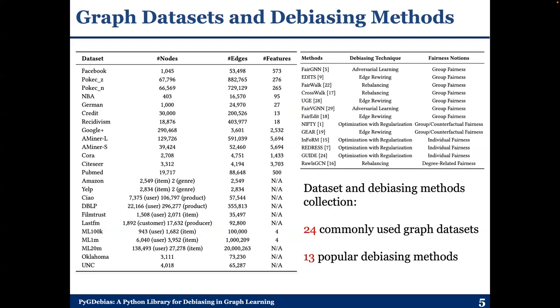Specifically, we include 24 commonly-used graph datasets and 13 popular debiasing methods for the ease of use of researchers and also industrial engineers.